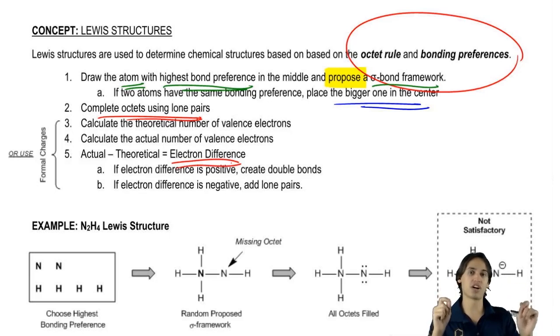And then if you had a positive electron difference, then you would create double bonds, meaning that if you have too many dots on the page, you start making double bonds to get rid of dots.